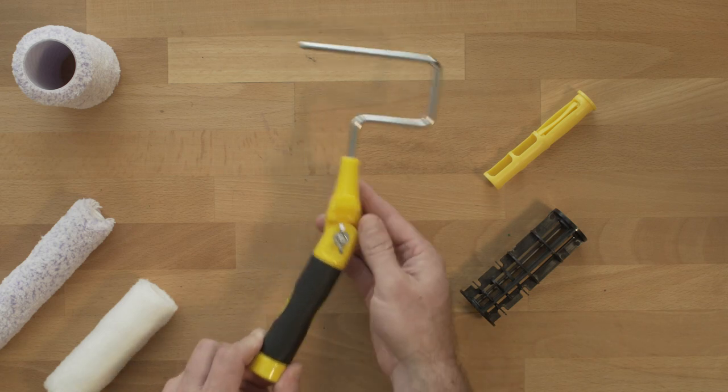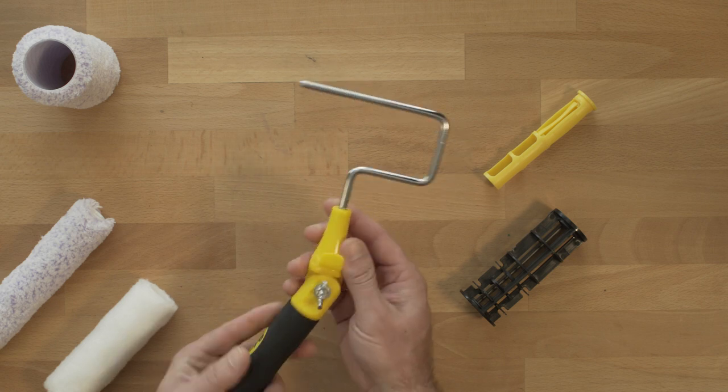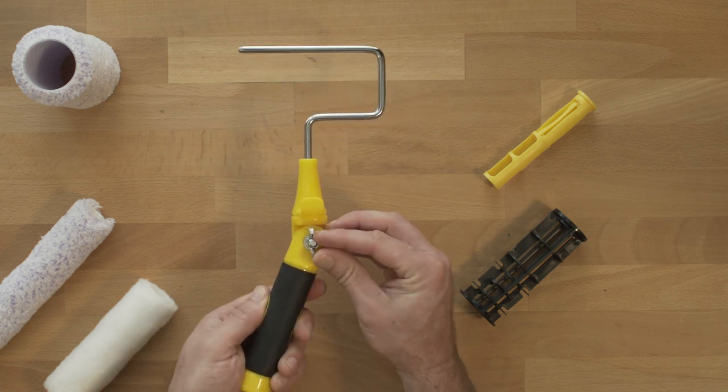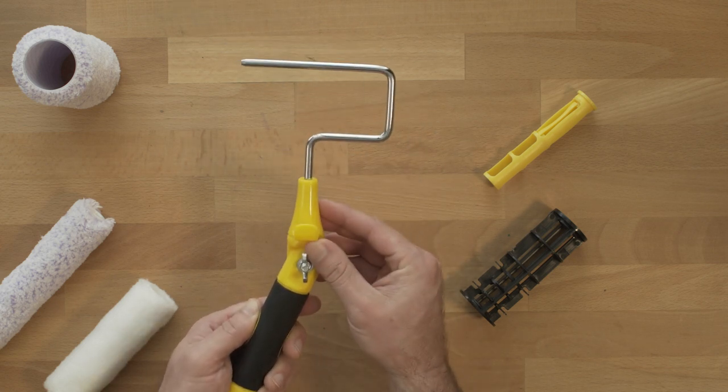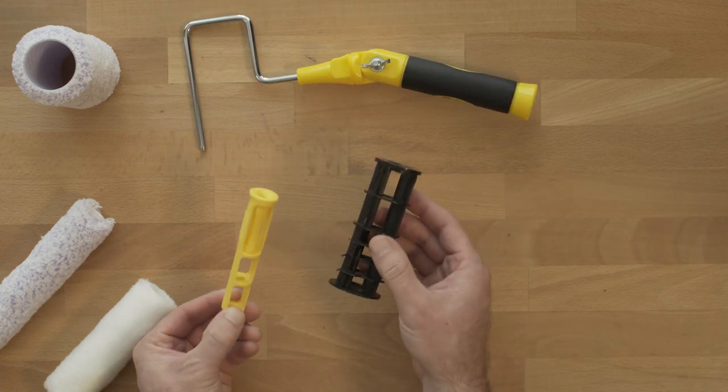This is the adjustable mini roller frame from Hyde. One of the coolest features is that the angle on the handle is adjustable, and I'm going to get to that in a minute. But first, the Hyde adjustable mini roller frame comes with two adapters.